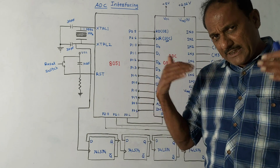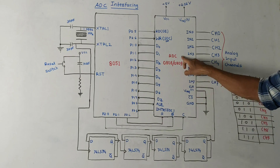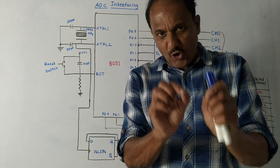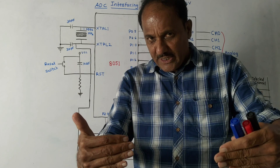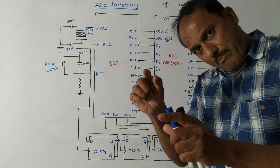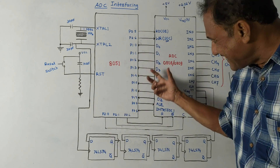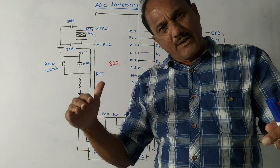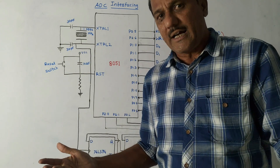Now let me explain this diagram — how to connect ADC to 8051. ADC stands for analog to digital conversion. The input signal will be analog in nature and the output of this IC will be a digital signal. We need to make a conversion of the analog signal into digital, and this digital data will be available at the 8051 for performing any other application.